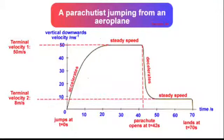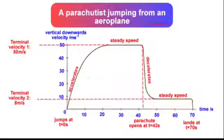If you look at this velocity-time graph, just the start of it, you can see a really steep gradient at the start as the falling mass rapidly accelerates. And as it falls, the air resistance is increasing, causing the resultant force to decrease, and so that gradient gets shallower.